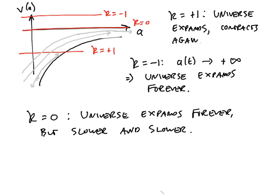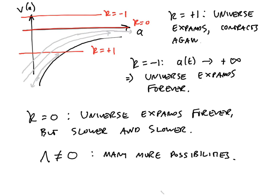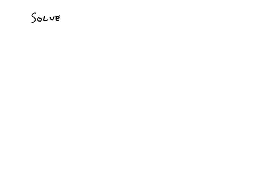These are the three qualitative possibilities for matter or radiation domination — they are qualitatively the same. If vacuum energy is non-zero, many more things can happen and you have to solve the equations again. Now let's actually solve for a(t) explicitly, taking the simplest case κ = 0.